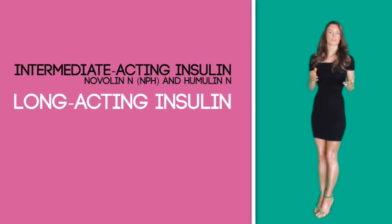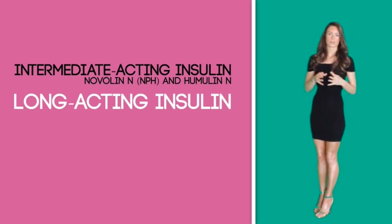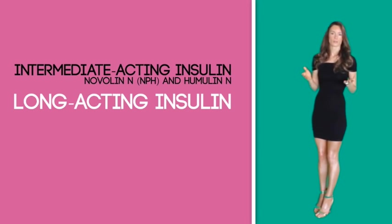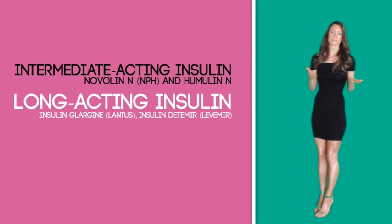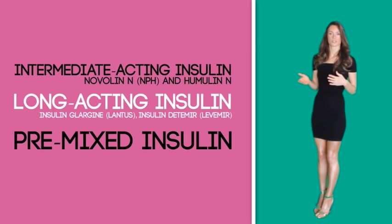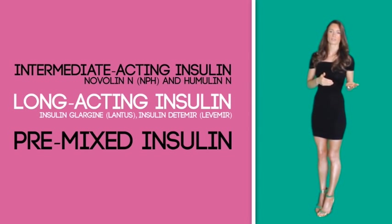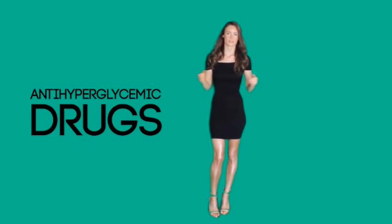Long acting insulin enters the blood many hours after injection and has minimal peak activity, showing a steady plateau effect throughout the day, working slowly and evenly to reduce blood glucose levels over a 24-hour period. It can be used between meals, while fasting, or overnight, along with rapid or short acting insulin. Examples include Lantus and Levemir. Pre-mixed insulin is a mixture of intermediate and short acting insulin solutions, generally injected prior to meals twice a day, intended for individuals who cannot measure dosage themselves.